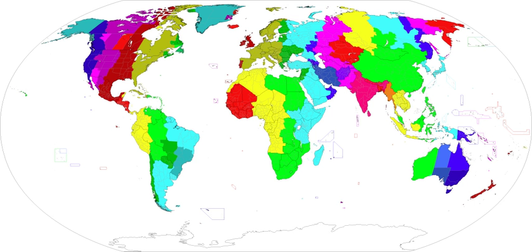Africa: Comoros, Djibouti, Eritrea, Ethiopia, Kenya, Madagascar, Mayotte, scattered islands in the Indian Ocean (Bassas da India, Europa Island, Juan de Nova Island), Somalia, South Sudan, Tanzania, Uganda.